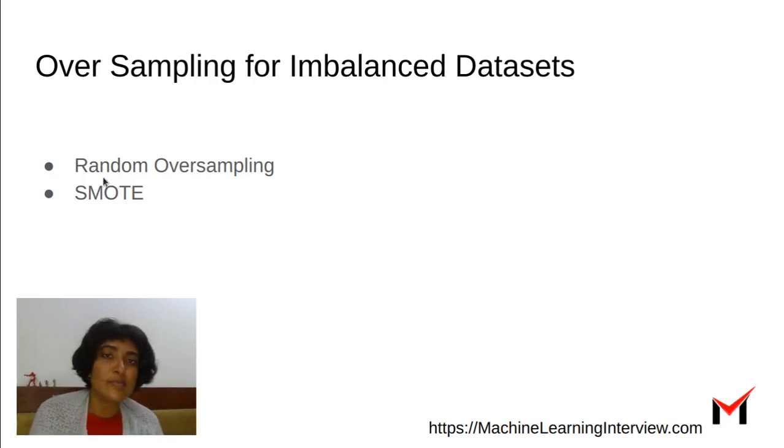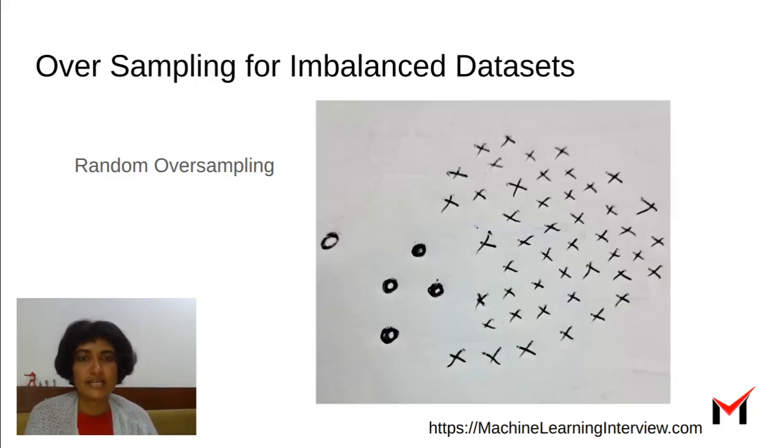But a popular technique to actually address this is SMOTE, where in random oversampling you're using the same points and repeating them so that you have as many minority class points. But in SMOTE, you're actually trying to create new points to balance the number of data points in the minority and the majority classes.